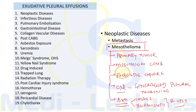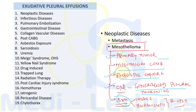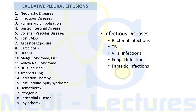Mesothelioma is the primary tumor of the pleura arising from mesothelial cells lining the pleural cavity. Most cases are related to asbestos exposure. The patient typically presents with chest pain and shortness of breath, and chest X-ray shows pleural effusion with generalized pleural thickening and a shrunken hemithorax. Diagnosis is usually made by image-guided or thoracoscopy-guided biopsy.